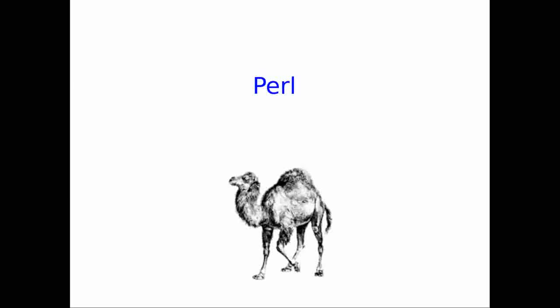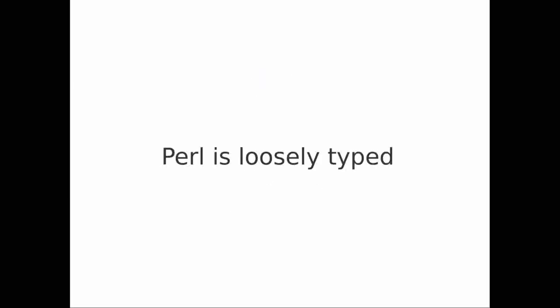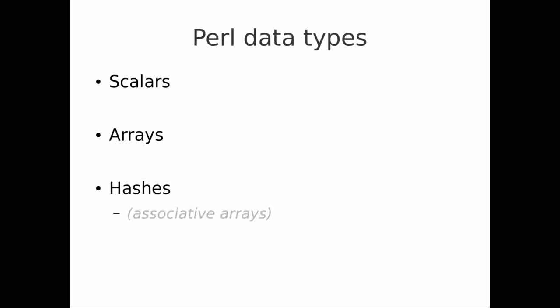The first thing that you need to know is that Perl is a loosely typed language. That means that it tries to do the right thing. Numbers are interpreted as numbers, and strings are interpreted as strings. Perl has three basic data types that you're going to run into: scalars, arrays, and hashes. Hashes used to be called associative arrays, but everybody calls them hashes nowadays.